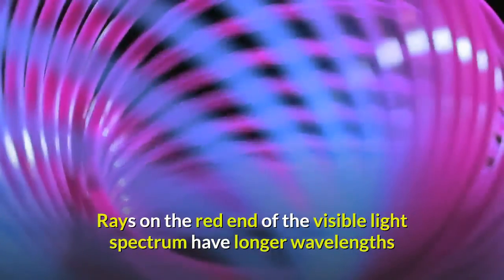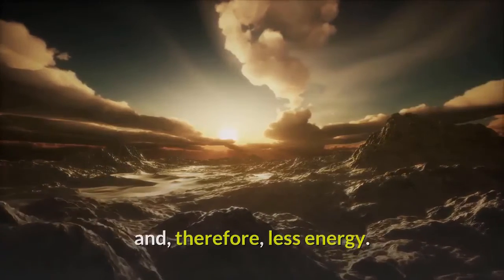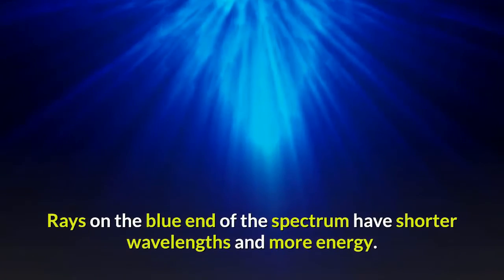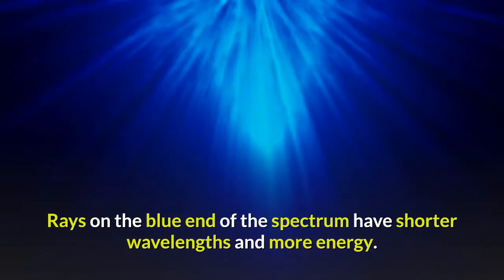Rays on the red end of the visible light spectrum have longer wavelengths and therefore less energy. Rays on the blue end of the spectrum have shorter wavelengths and more energy.